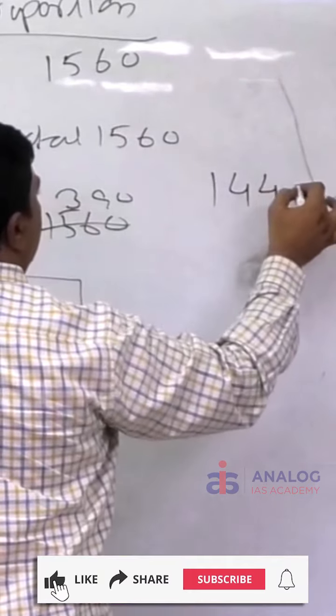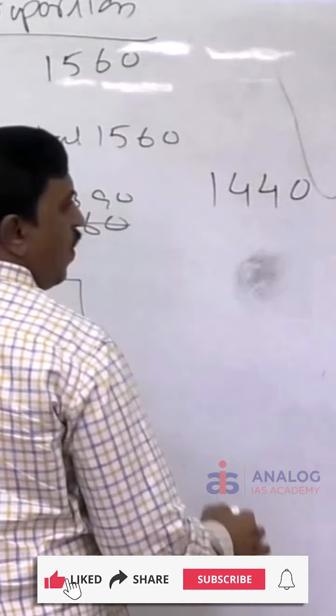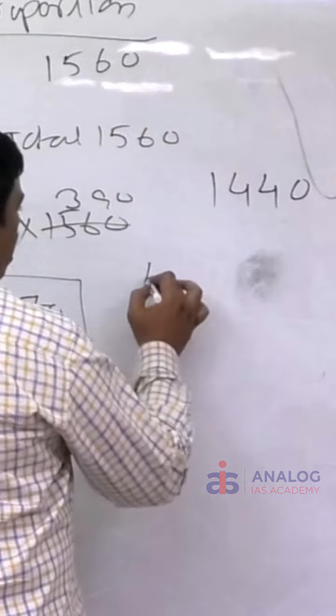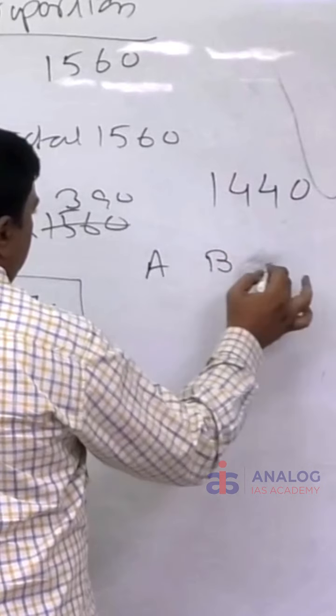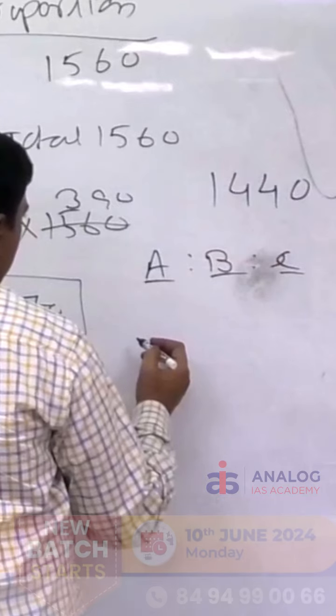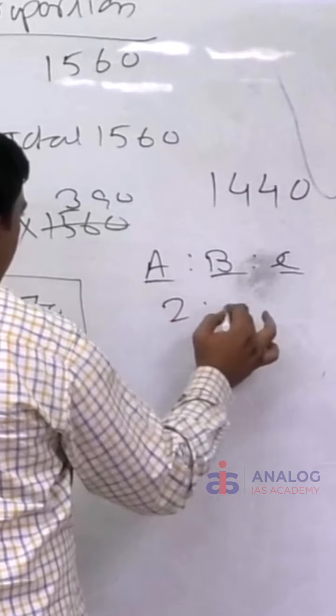1,440 rupees is divided among A, B, and C in the ratio 2:1:1.